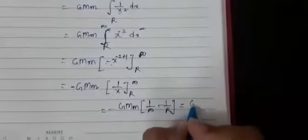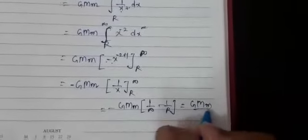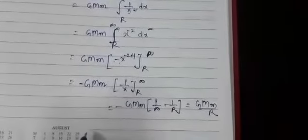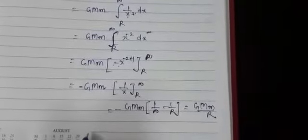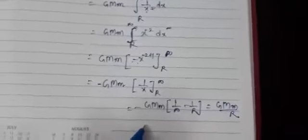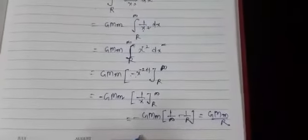Integrating from R to infinity: total work done = −GMm × [1/∞ − 1/R] = GMm/R. This is the expression for total work done in moving the body against gravitational force.